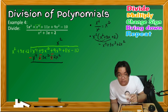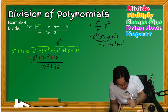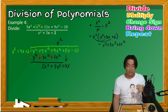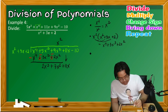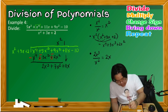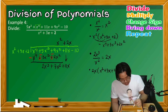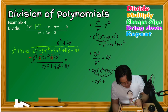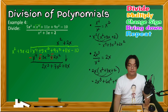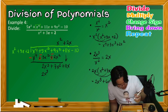5x³ − 3x³ = 2x³ and 9x² − 2x² = 7x². Bring down positive 11x and repeat step 1. Divide 2x³ by x² to get 2x, placed on top of 11x. Multiply 2x by the divisor x² + 3x + 2 to get 2x³ + 6x² + 4x, written under the corresponding terms.